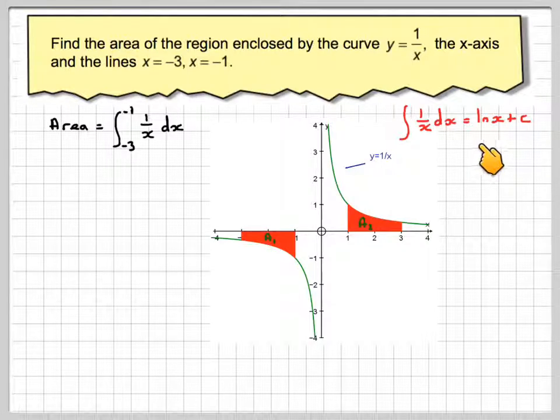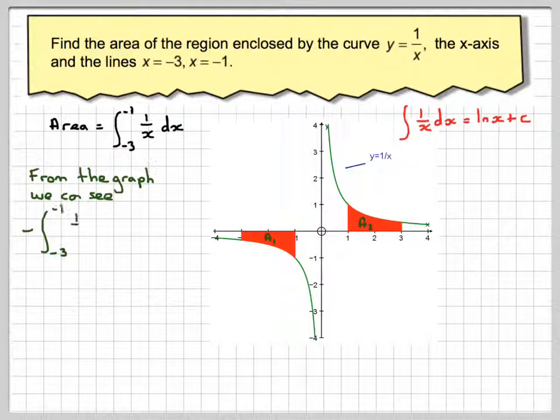So to get around this idea of not being able to put a negative number in, we know from the graph, if we did minus this one from minus 3 to minus 1, it would be equal to the same as the integral from 1 to 3 of 1 over x.